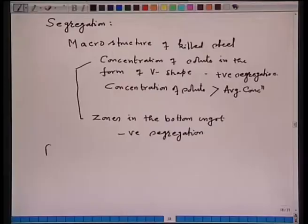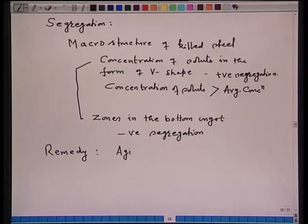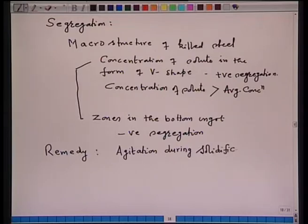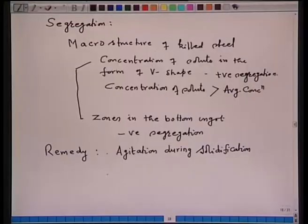The remedy for segregation: one way is to provide agitation during solidification itself. If we can agitate the liquid steel during solidification, it will homogenize the concentration and hence the chances of segregation will be minimized. Another way is that the microsegregation in the inter-dendritic region can be eliminated by a treatment called homogenization.